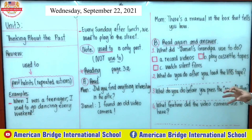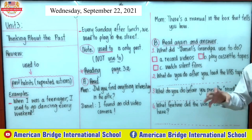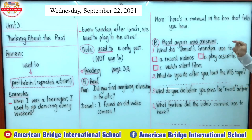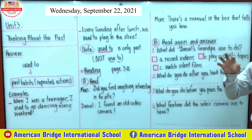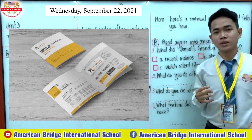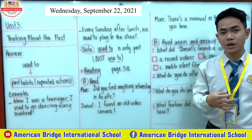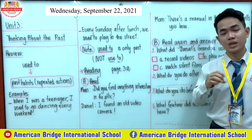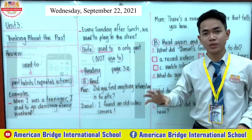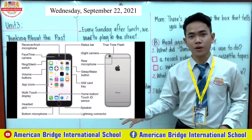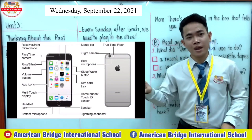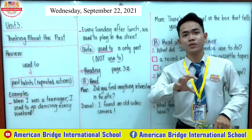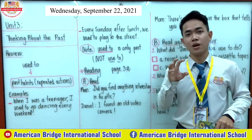Next we have 'video camera.' An old video camera is a camera which we use to shoot video. And then we have the word 'manual.' What is a manual? When you buy a product or device — for example a smartphone — in that box you see a manual, which is an instruction book that tells you how to use something. Like when you buy an iPhone, you open that manual and it tells you how to use the camera, how to use the phone correctly.